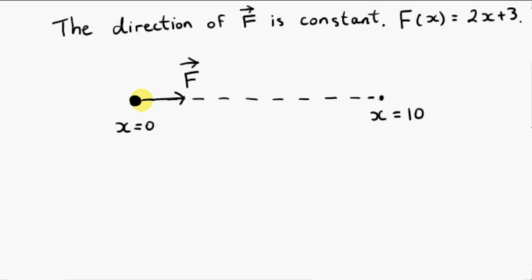We will not cover the general case of a varying force. We will cover the case of a force whose direction is constant, but whose magnitude varies. The direction is always pointing to the right, but the magnitude varies by this function here.